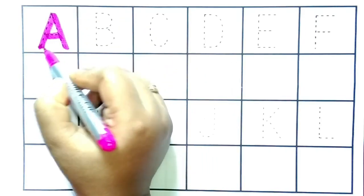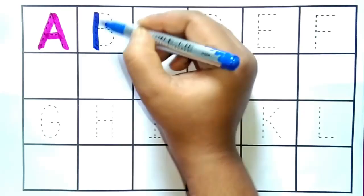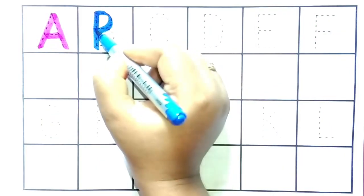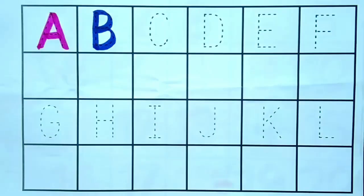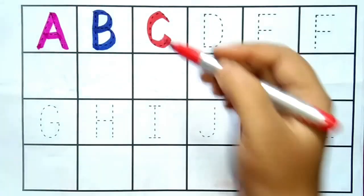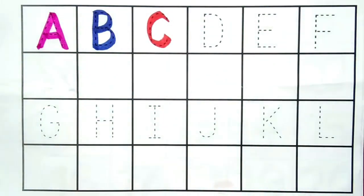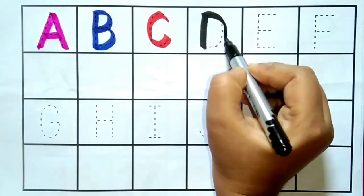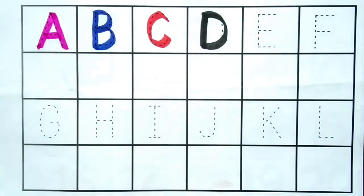A for aeroplane. B for ball. C for cat. D for doll.